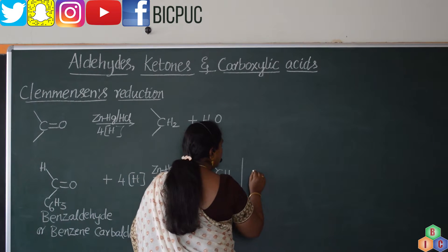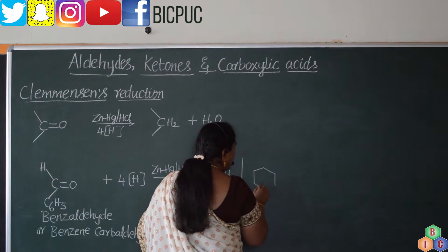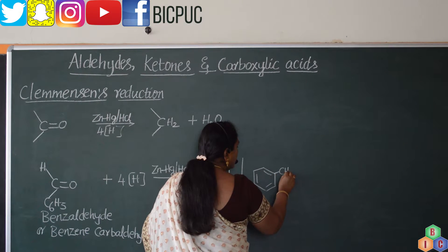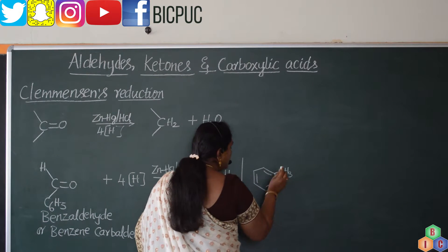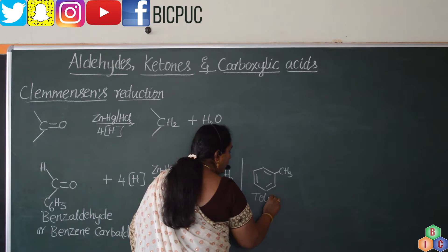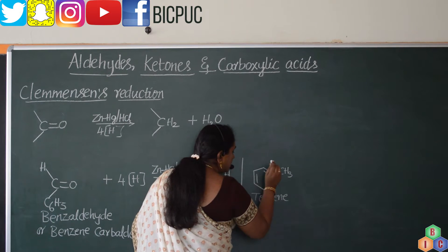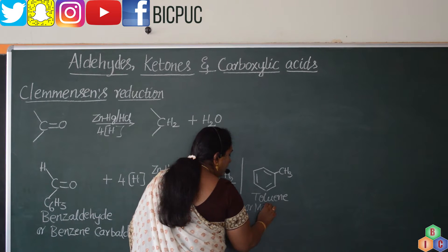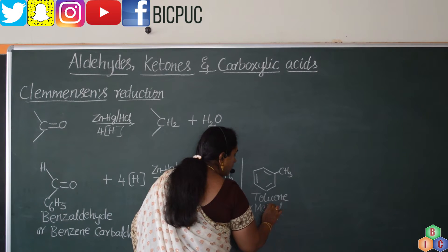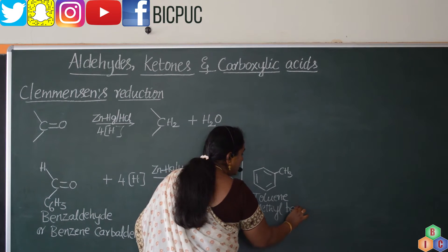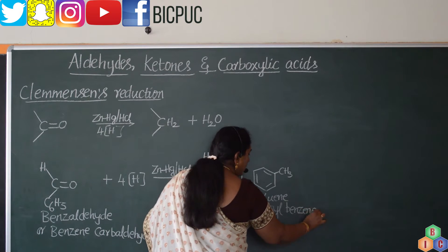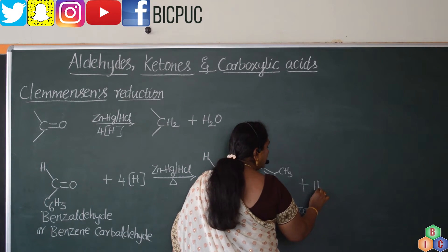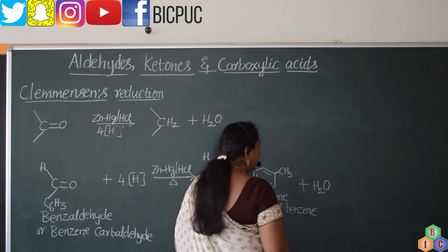The product is the same benzene ring with a CH3 group attached. This is toluene, which is the trivial nomenclature. Methylbenzene is its IUPAC nomenclature. Now, what happens to the hydrogen? As you know, it gets oxidized to water.